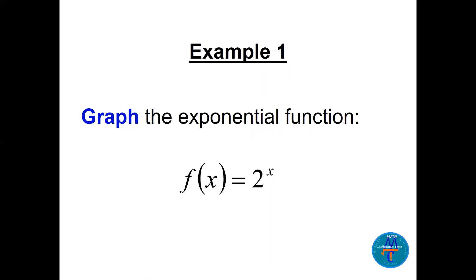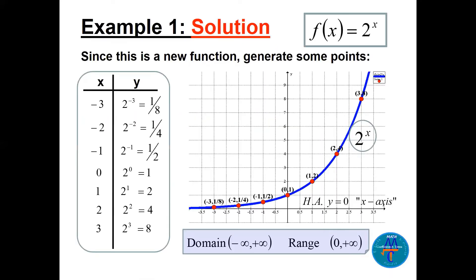Let's graph the exponential function f(x) = 2ˣ. If you don't know the graph, take some points. Starting with x = 0: 2⁰ = 1, giving the point (0, 1). If x = 1, y = 2. If x = 2, y = 4. If x = -1, y = 1/2, giving the point (-1, 1/2).